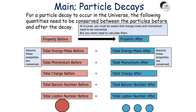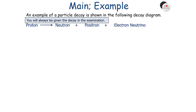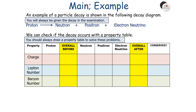At A-level, it's always assumed that energy, mass, and momentum need to be conserved, but you never need to calculate them. You must prove that the charge, baryon number, and lepton number are conserved in a particle decay. An example of a particle decay: a proton can decay into a neutron, a positron, and an electron neutrino. You'll always be given the decay you'll be examining in your examination question. To check if the decay occurs, we draw a property table — you should always draw a property table to solve these problems, considering charge, lepton number, and baryon number before and after the decay.